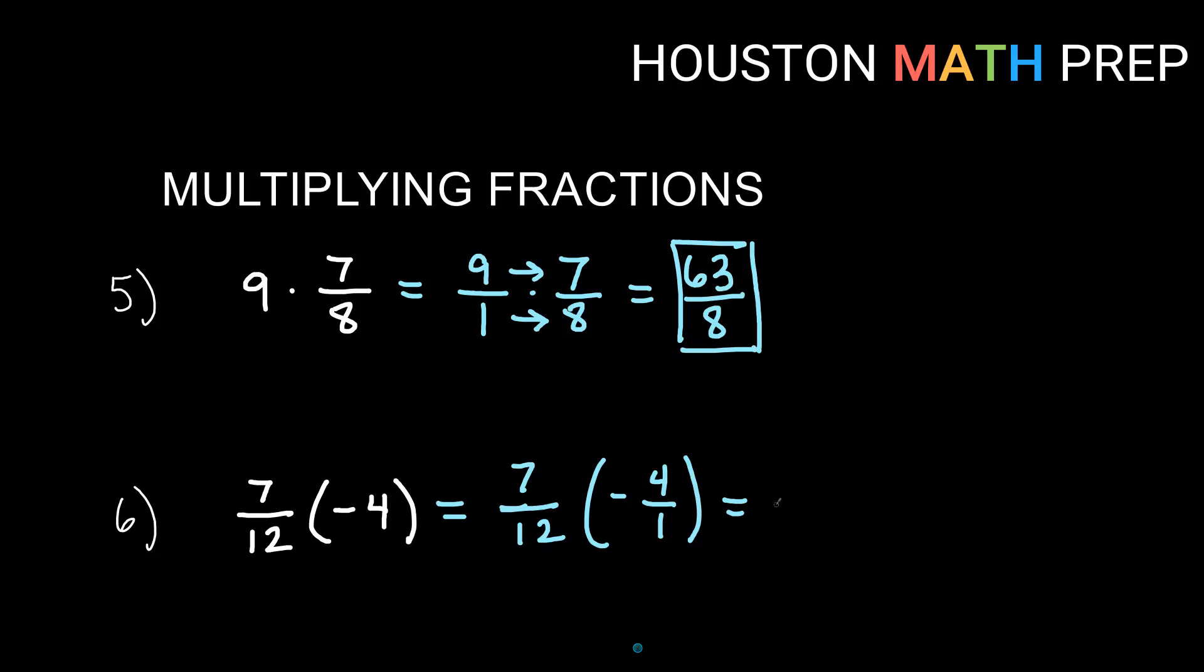And then if you want to reduce, you might see that 4 and 12 have common factors. They're both divisible by 4. So if I divide this by 4, I would get 1. If I divide this by 4, I would get 3. So now just multiply across. 7 times 1 on the top will give 7. And 3 times 1 on the bottom will give 3. And we already decided that our answer was negative.